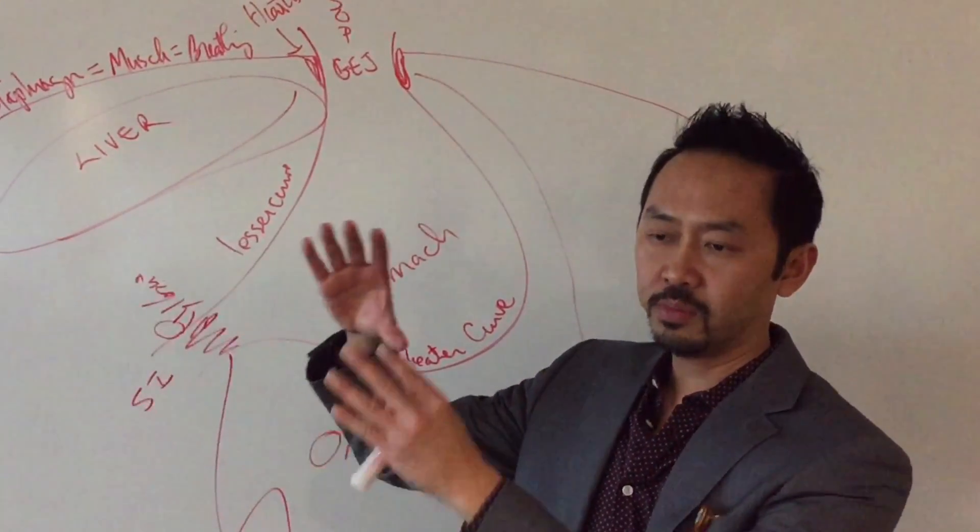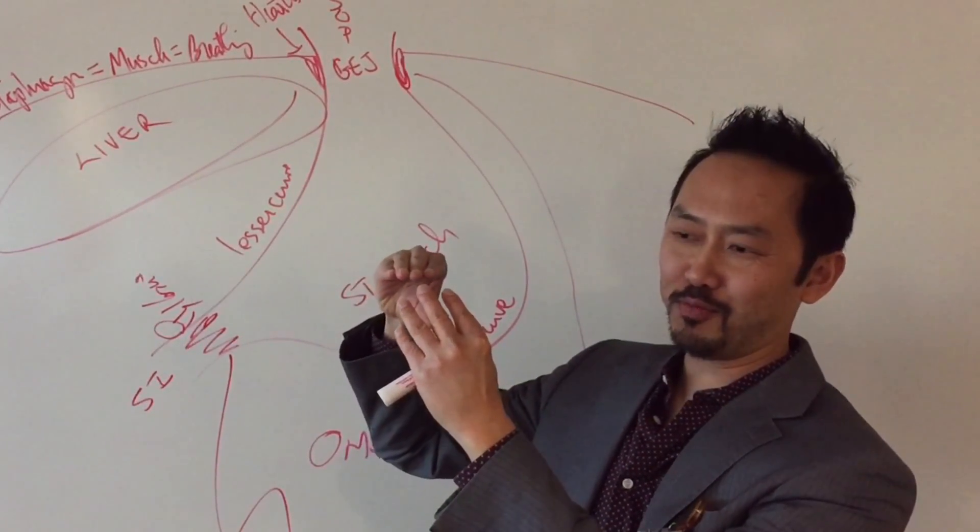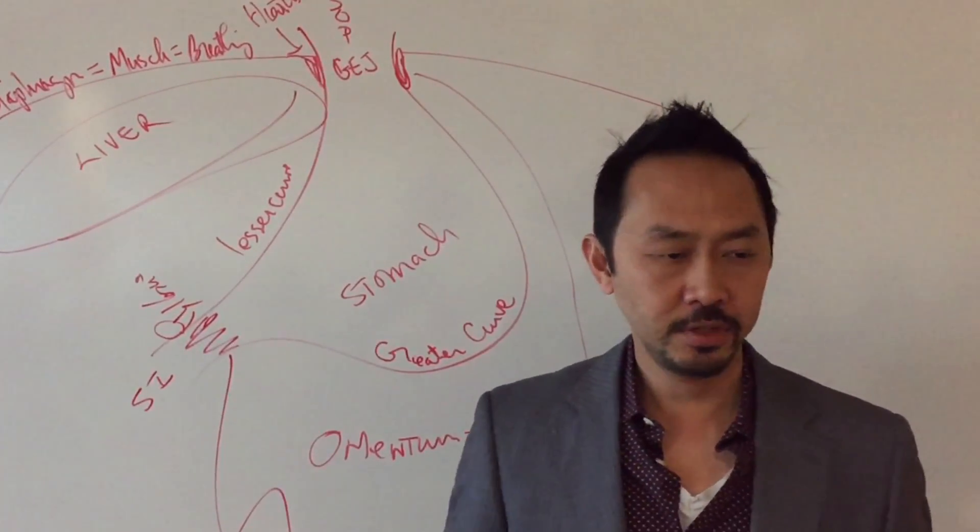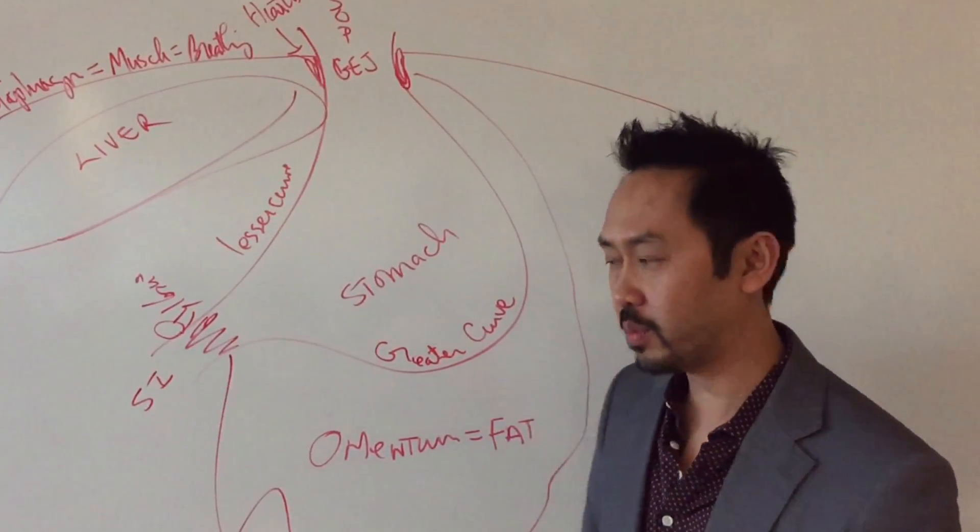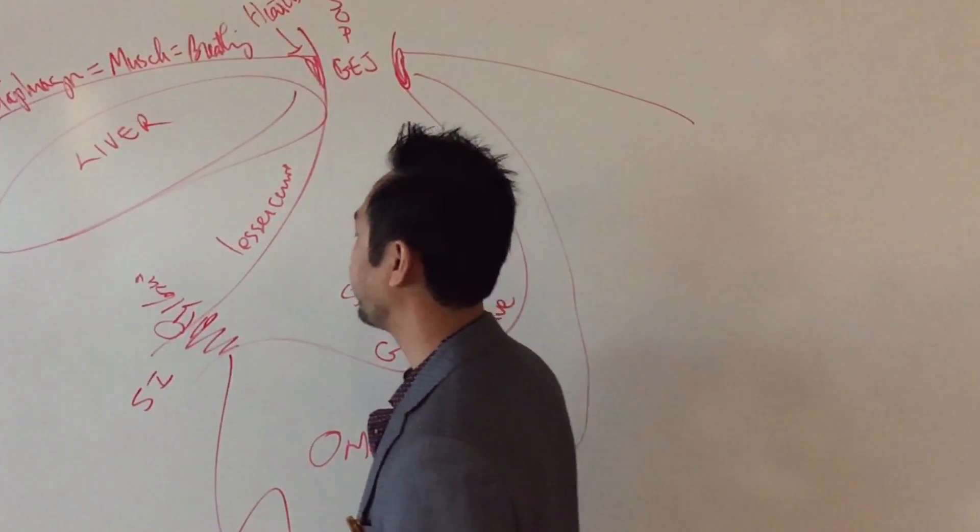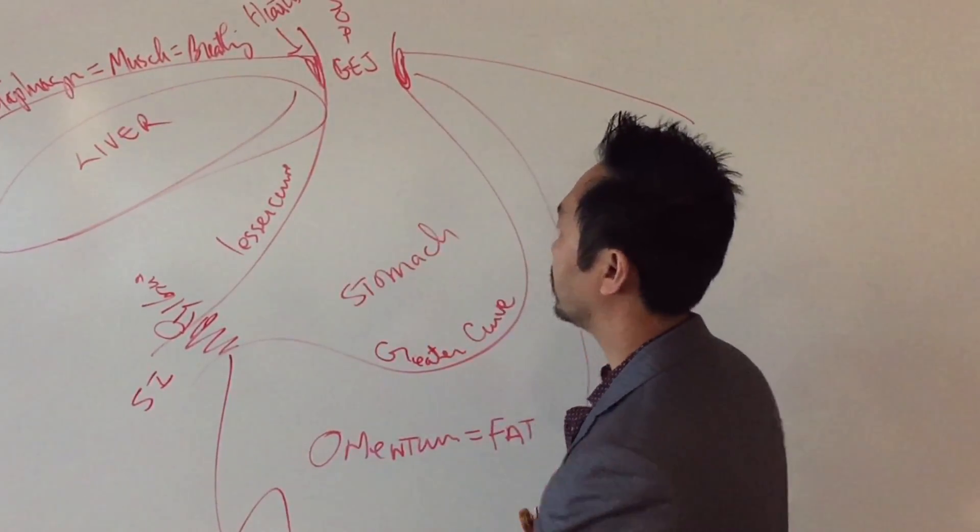You have fat inside your arteries that's keeping blood flow from going to your brain. That's a stroke. Keeping blood to go into your heart. That's called a heart attack. So it's the fat on the inside that's killing y'all.